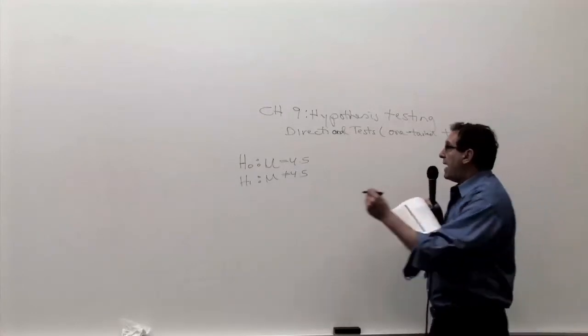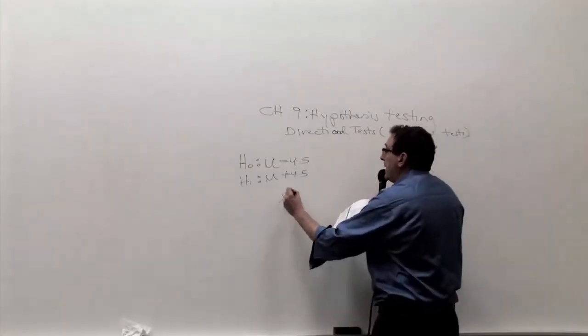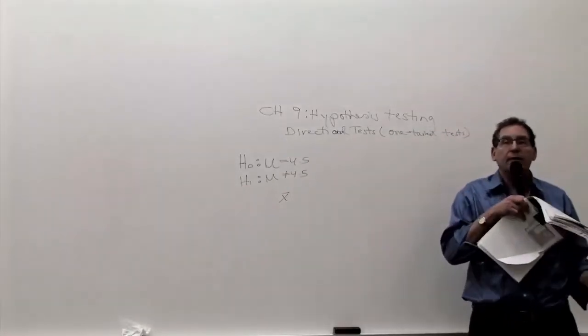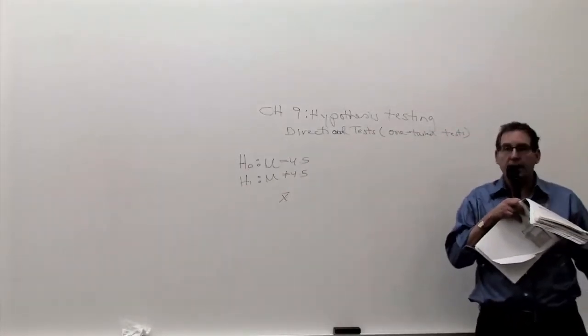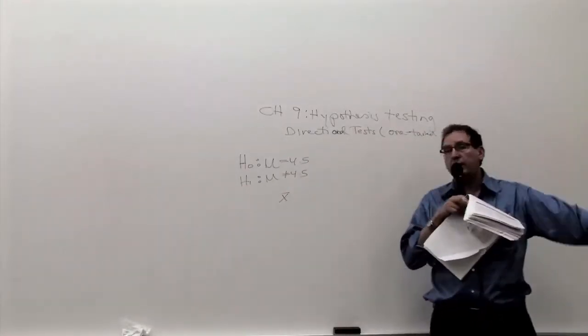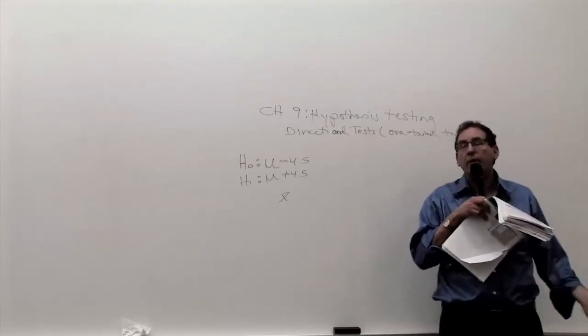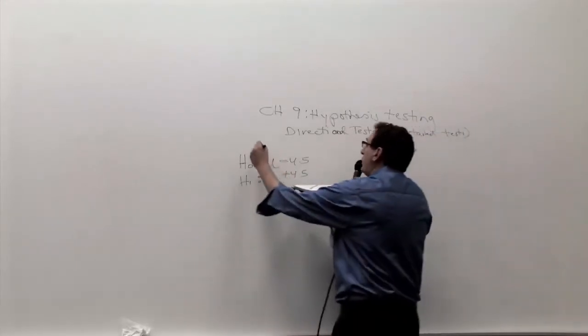But if it turns out that the average from your sample is much bigger than 4.5, much, much bigger, does that prove it's a bad table? Yes. What if it's much smaller? Does that prove it's a bad table? Yes. I don't care if it's high or low. This is called a non-directional test.